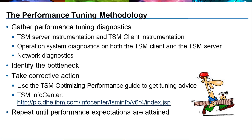When the bottleneck is identified, take corrective action. Use the TSM Optimizing Performance Guide to get advice about setting TSM parameters that might affect performance. It might be necessary to add network, disk, or tape resources to relieve the bottleneck. This process can be repeated as often as necessary until the desired performance is achieved or until there is no practical way to remove the bottleneck.